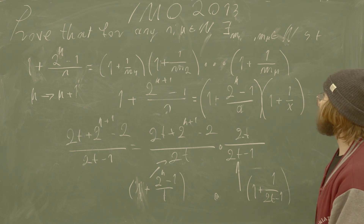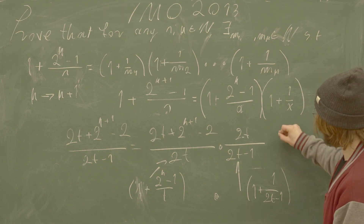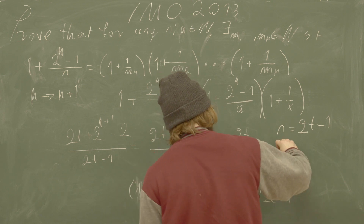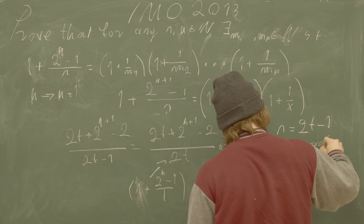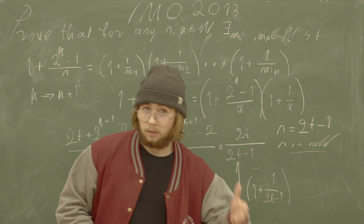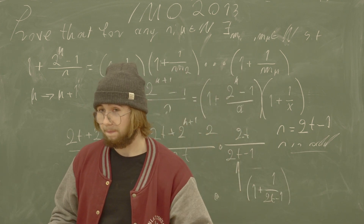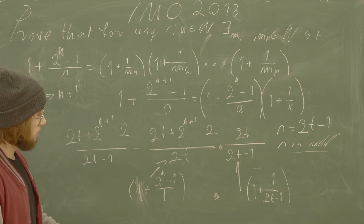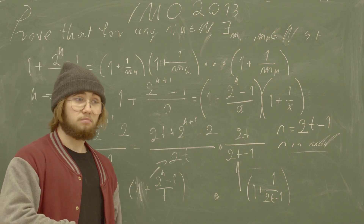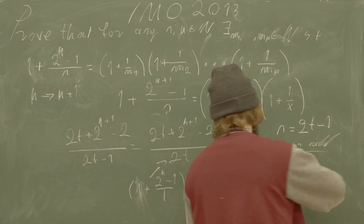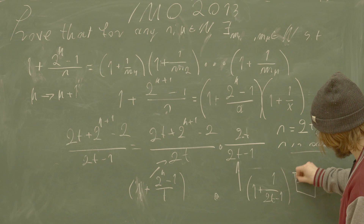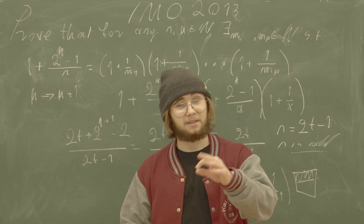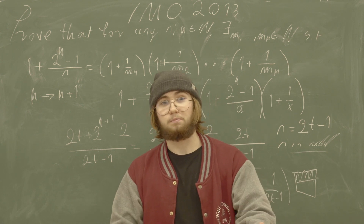Wait — not really, because we assumed here that n equals two times t minus one, so n is odd. What about even n? We kind of left that out. So the problem is only half solved. I'll clear the board and come back with the final part of the solution.